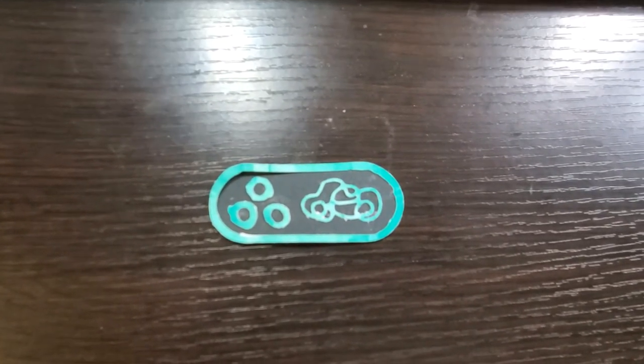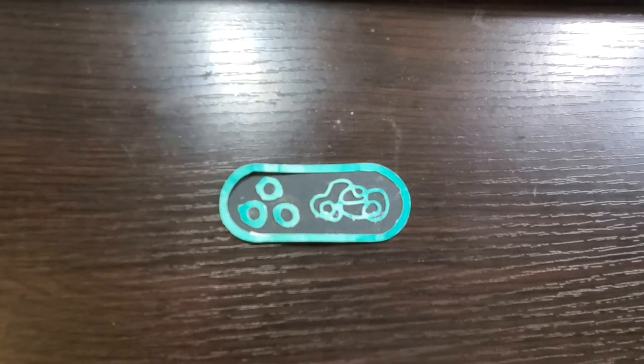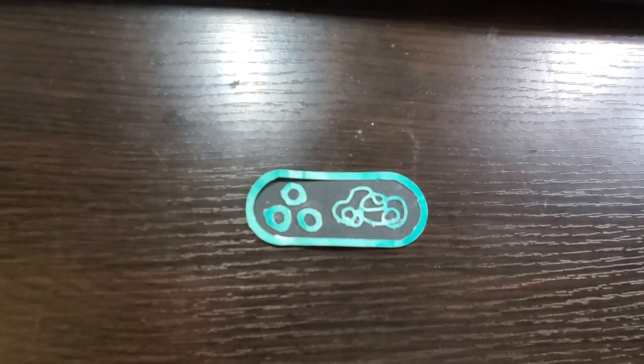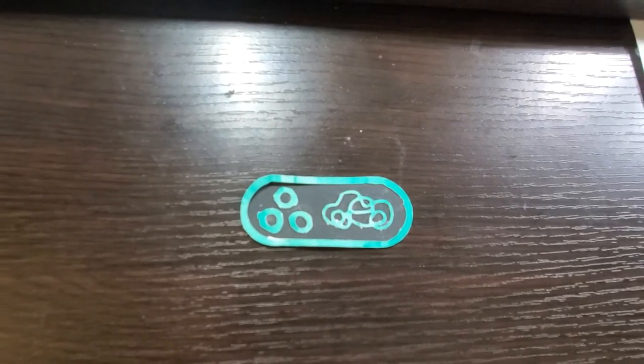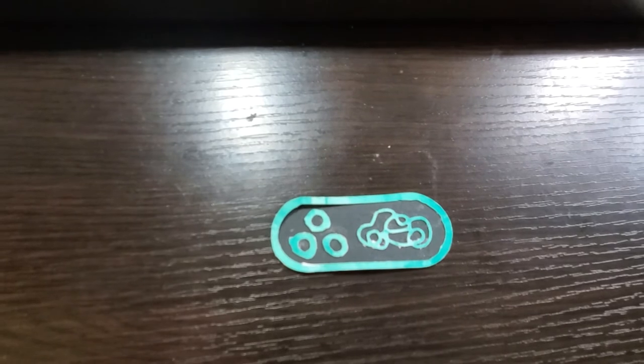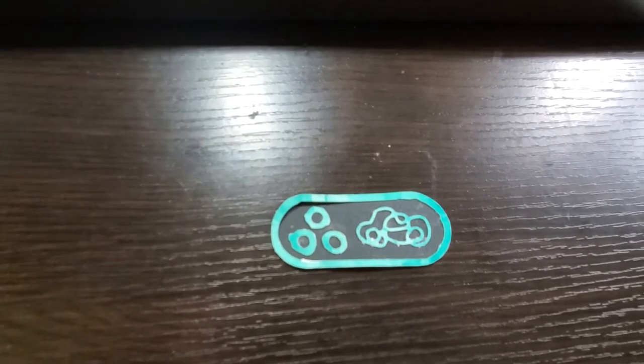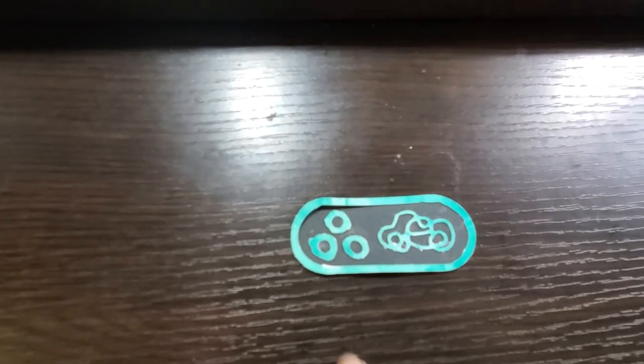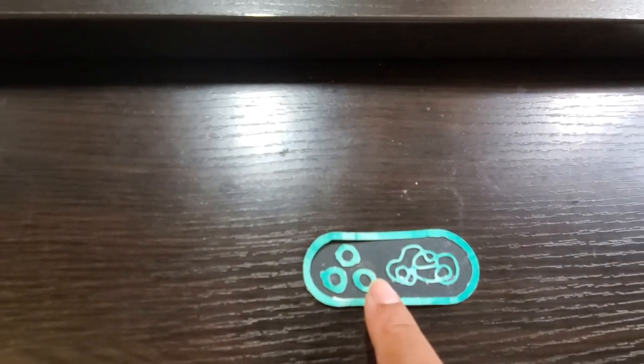So back to Yersinia pestis the pathogen itself. It is a gram negative facultative intracellular bacillus shaped bacterium. It contains three important plasmids for the pathogenesis of Yersinia pestis which is marked by these three circles here.